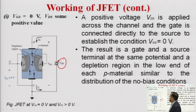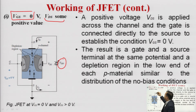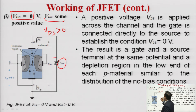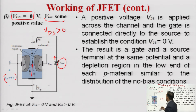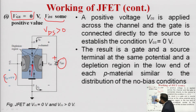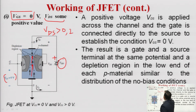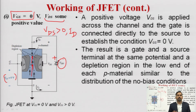At first, consider VGS equal to 0 and VDS greater than 0. When VDS is positive, this positive terminal attracts electrons, so electrons move in the upward direction toward the drain terminal, contributing a current in the opposite direction. As drain-to-source voltage increases, the drain current ID increases. When VGS is 0 we have the minimum depletion region, but as VGS increases in a reverse bias manner, the depletion region widens and the effective channel width keeps decreasing.